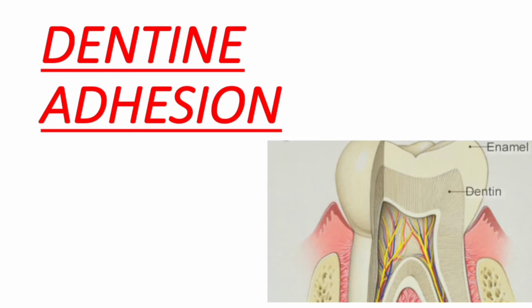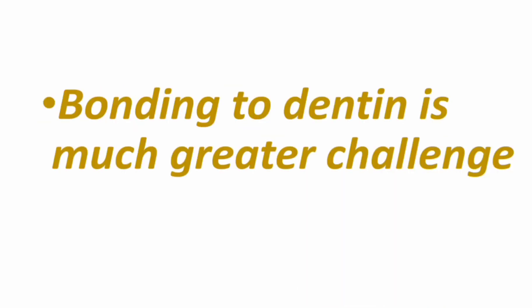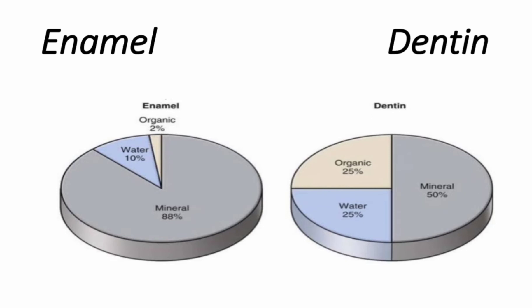Initially, we have to know what is dentine adhesion. Bonding to enamel is a relatively simple process, but adhesion to dentine presents a much greater challenge due to structural dissimilarities. Dentine consists of a substantial proportion of water and organic material, as compared to the 90% mineral composition of enamel.